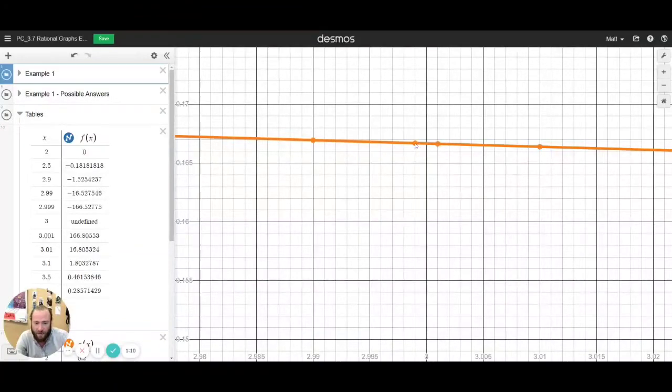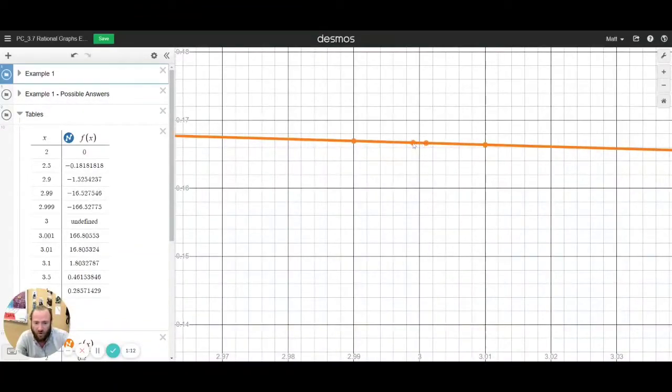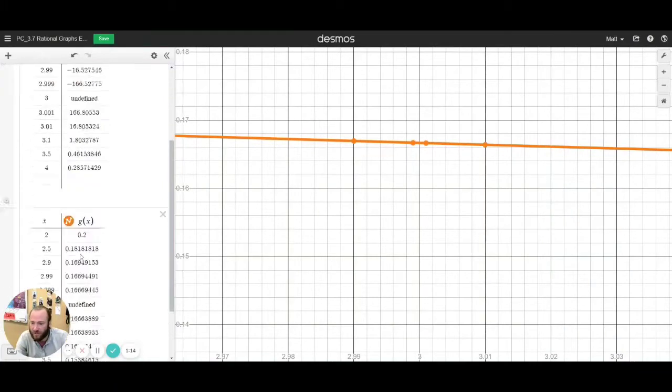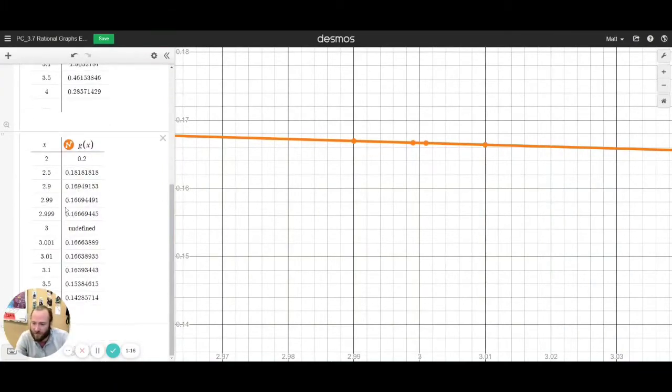The thing is, all these outputs seem to crawl closer and closer to a single value. So if I scroll here and I look at this table, you'll notice the closer we get to 3, it seems to be approaching 0.1666,